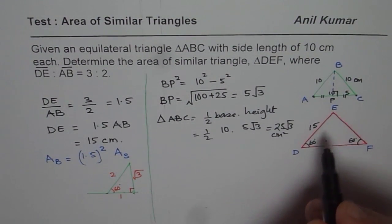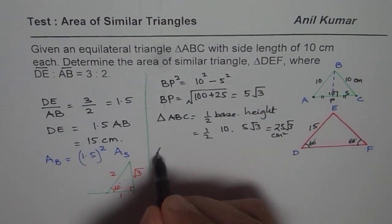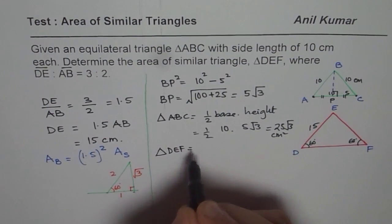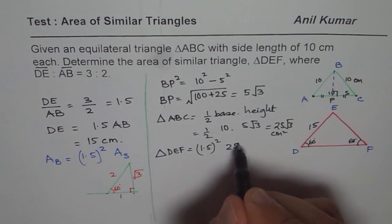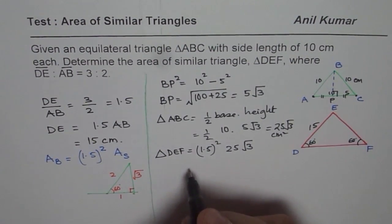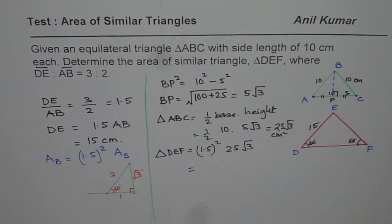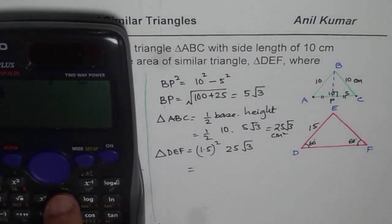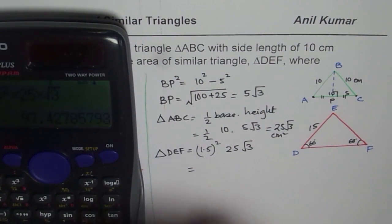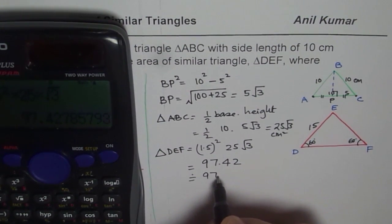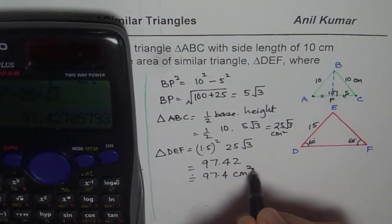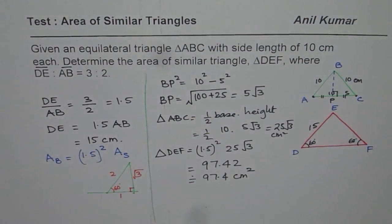Once we know area of our smaller triangle, bigger triangle is 1.5 times. And so we say area of triangle DEF equals 1.5 squared times the area of smaller triangle, which is this. And now you can use calculator and figure it out. So it is 1.5 squared and then times 25 and then times square root of 3. So the exact value, well, it turns into decimals. Let us write this 97.42 or approximately equals to 97.4 centimeter squared. So that becomes the area of the big triangle.